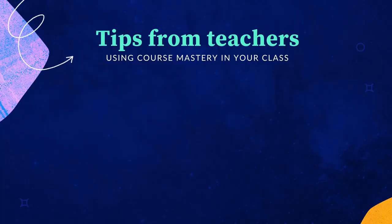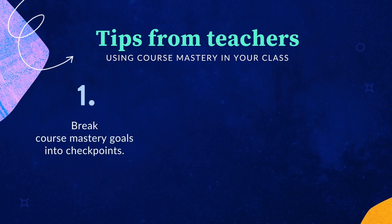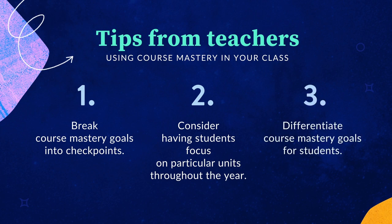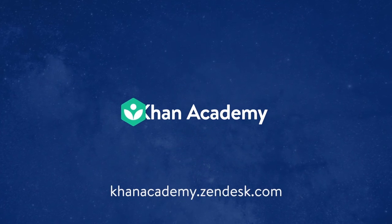Some advice from teachers using Khan Academy's course mastery in their classrooms: mastering an entire course can feel daunting to students, so break it up into checkpoints like monthly goals. You can also consider having students focus on particular units throughout the year, then check the unit report to see how they're doing. You don't need to assign the same course mastery goal to every student. To differentiate, you can assign different courses to different students. Some teachers even assign a mastery goal for a previous grade level as review at the start of the year.